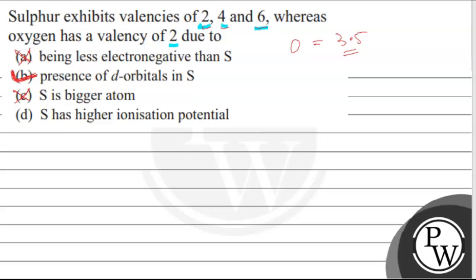So, this question's correct answer is option B. It exhibits 2, 4 and 6 valencies because of the presence of vacant d orbitals in sulfur. So, option B is the correct option for this question. Hope you got this. Thank you.